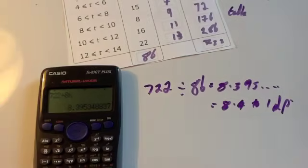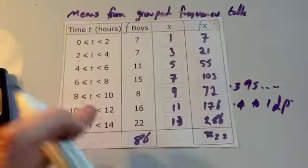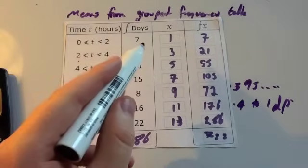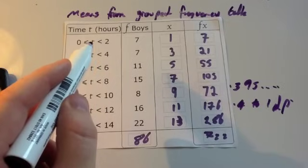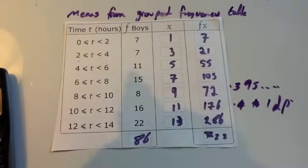And that's how you find an estimated mean. The question might ask you why it's an estimate. The reason is because you don't know the actual values for these seven boys between 0 and 2. We've just gone for the middle one being a representative value.